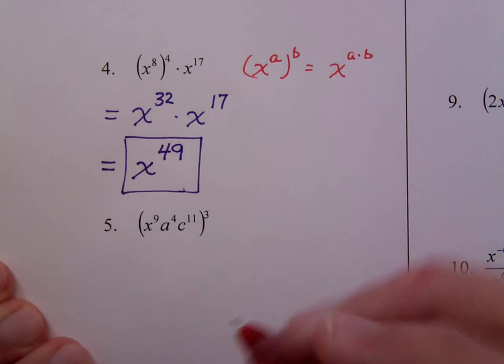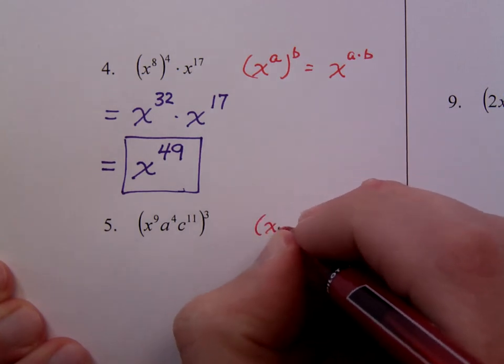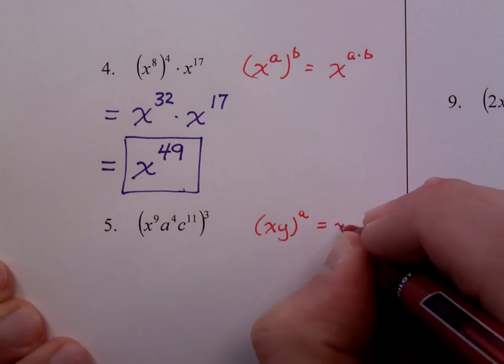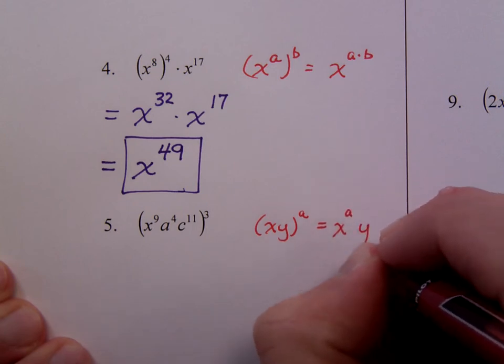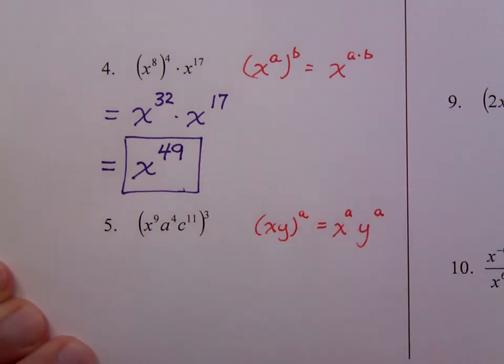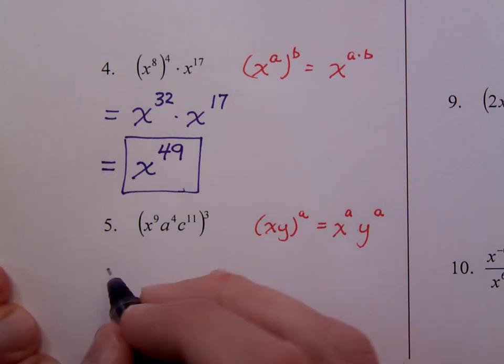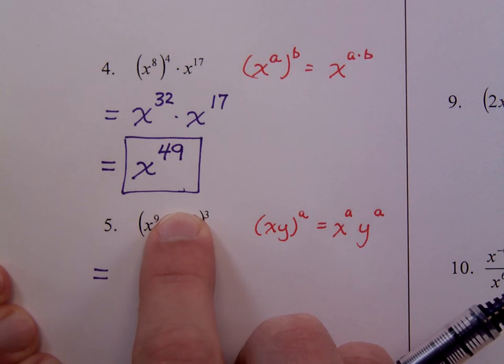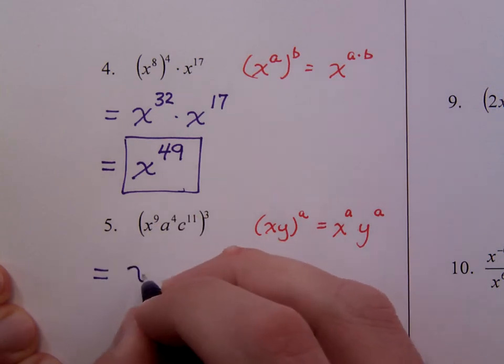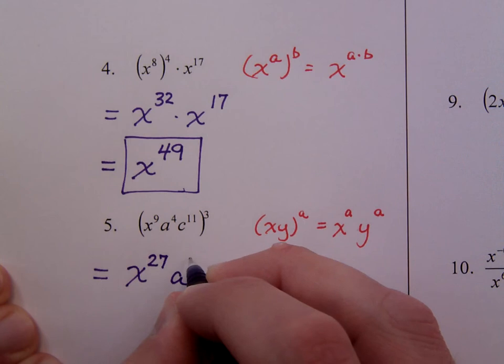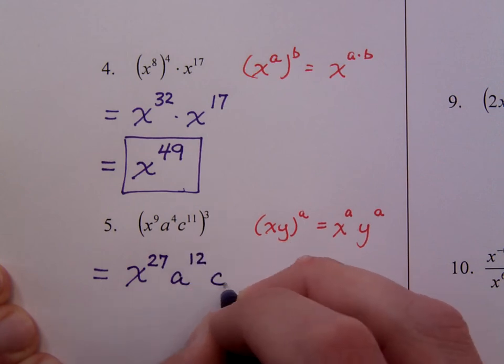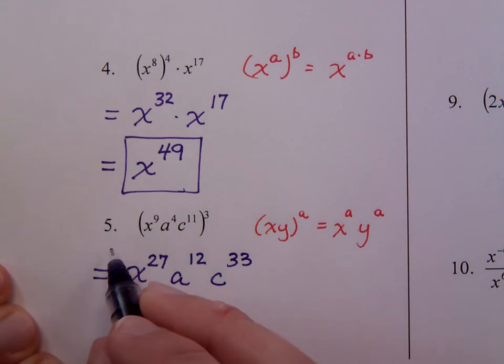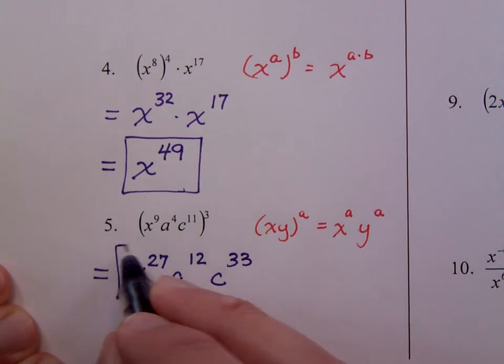And problem number 5, this goes back to raising a product to a power, which just means you raise each of these pieces to the power. And the same thing works for if you're doing division. So here, you can see this as x to the 9th to the 3rd. So that's x to the 27th. Then you have a to the 12th. And c to the 33rd. You don't have any negative exponents, so this guy is done.